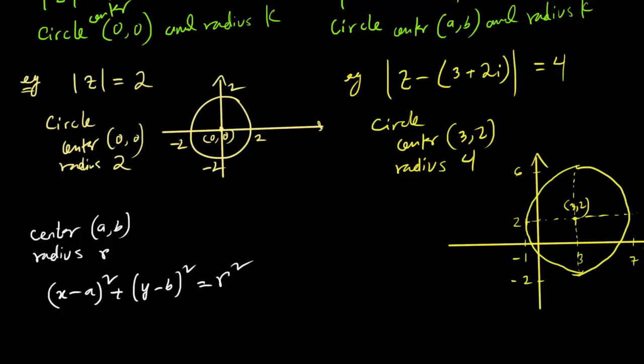That means the sum that we just did is going to have a Cartesian equation of x² plus y² equals to 2². And in this case, (x-3)² plus (y-2)² equals to 4². So that's how you express the equation of a circle.